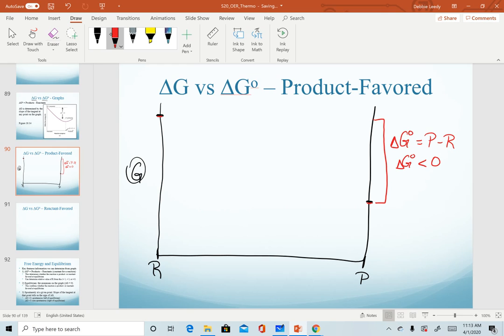And what we start to define is that when delta G° is negative, this tells me that I have a product favored reaction at equilibrium. Remember, reactant or product favored is specifically once the system has come to equilibrium.